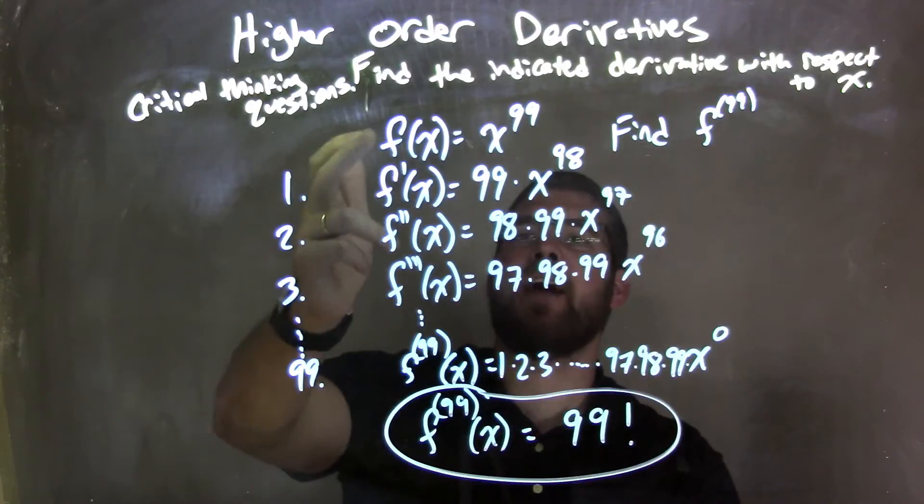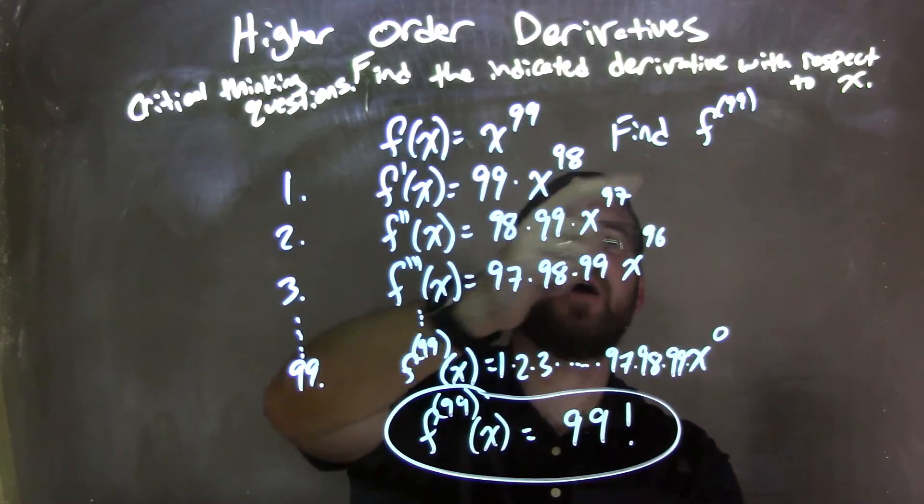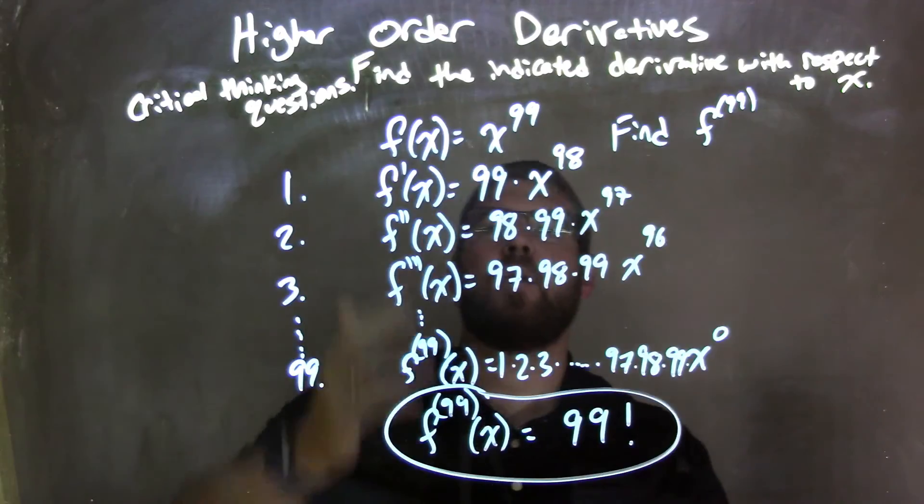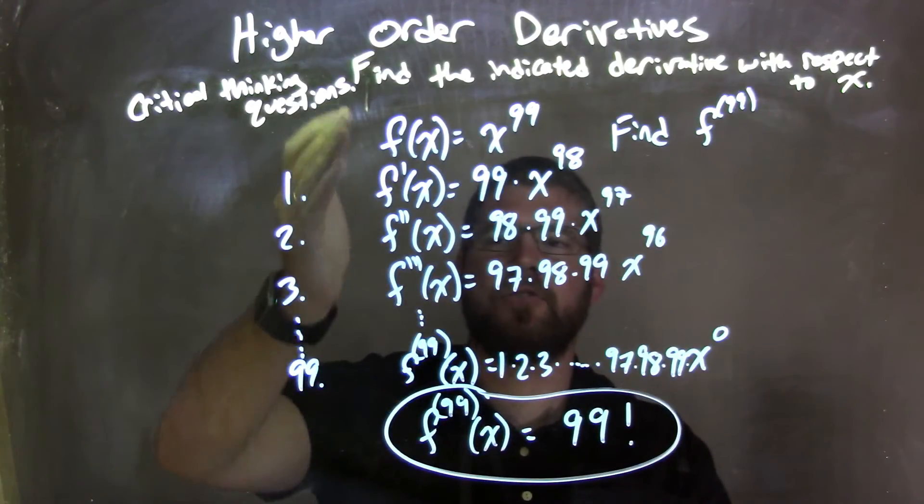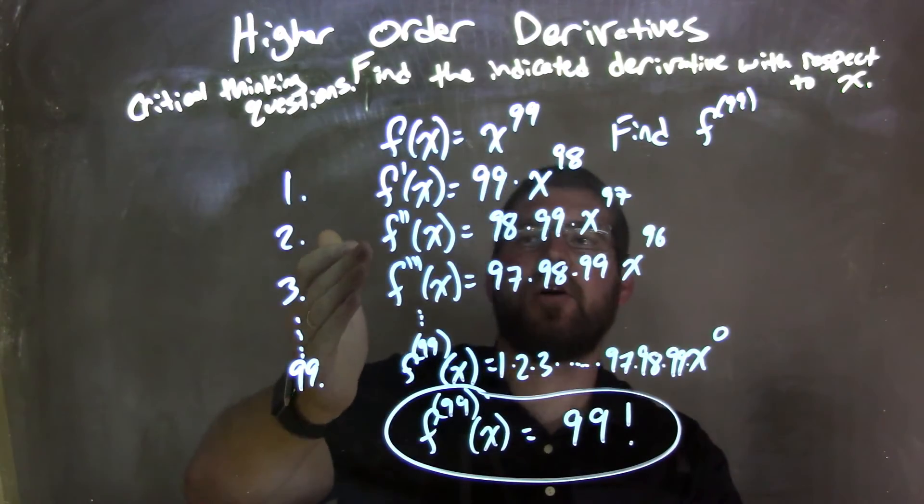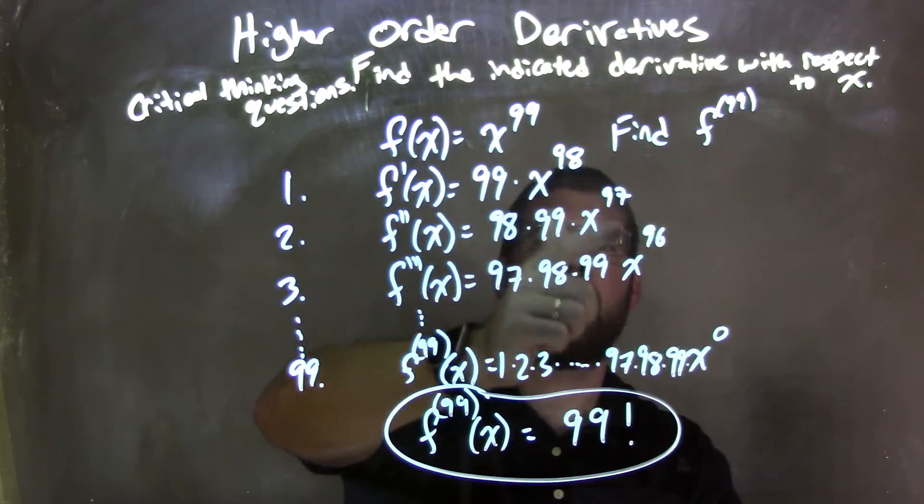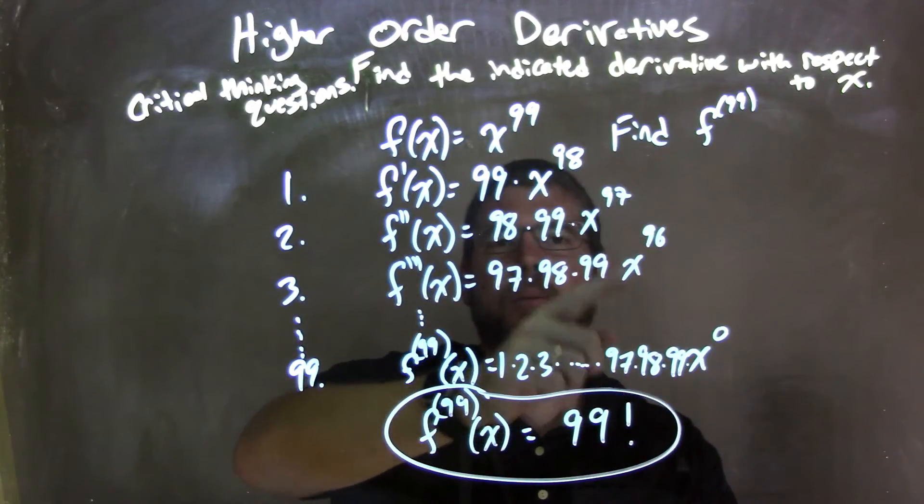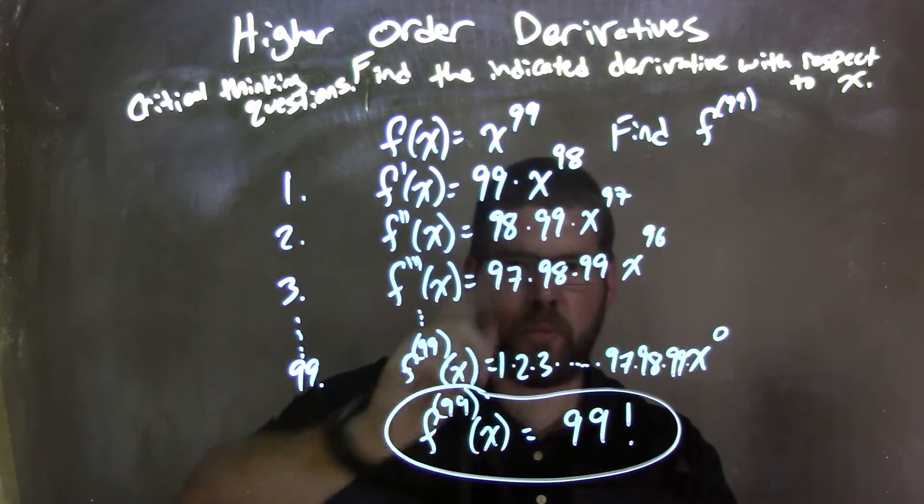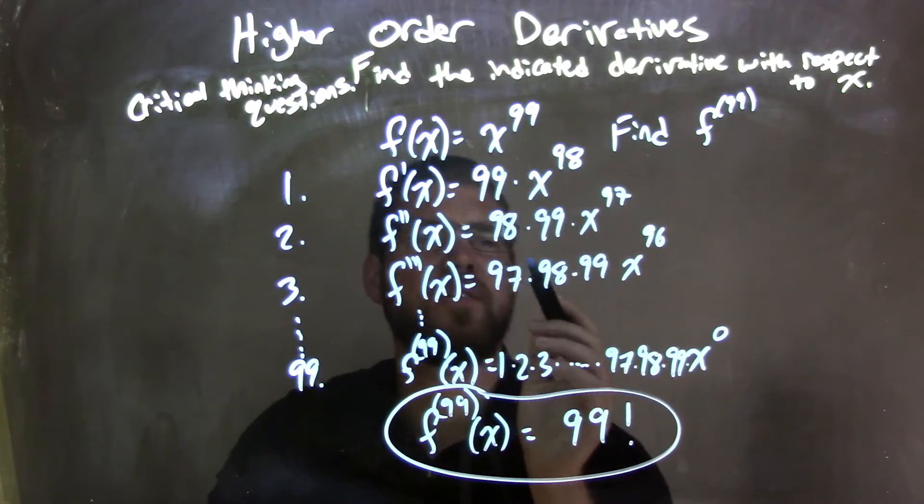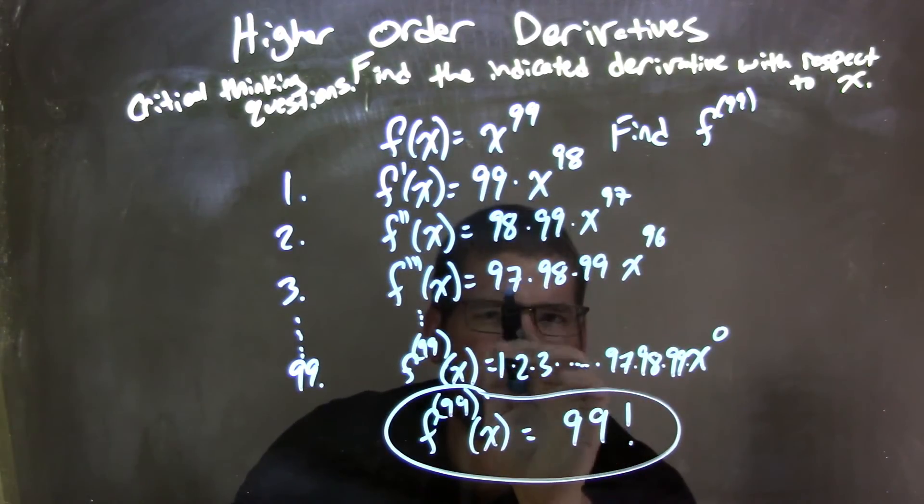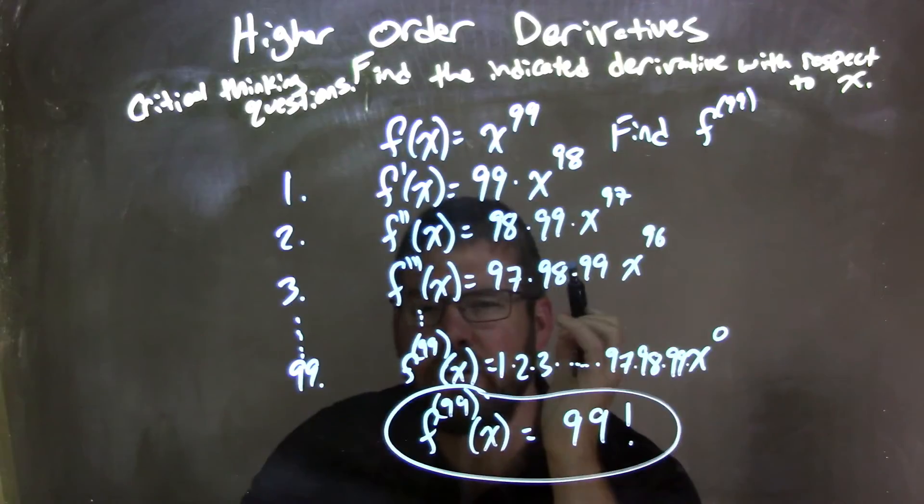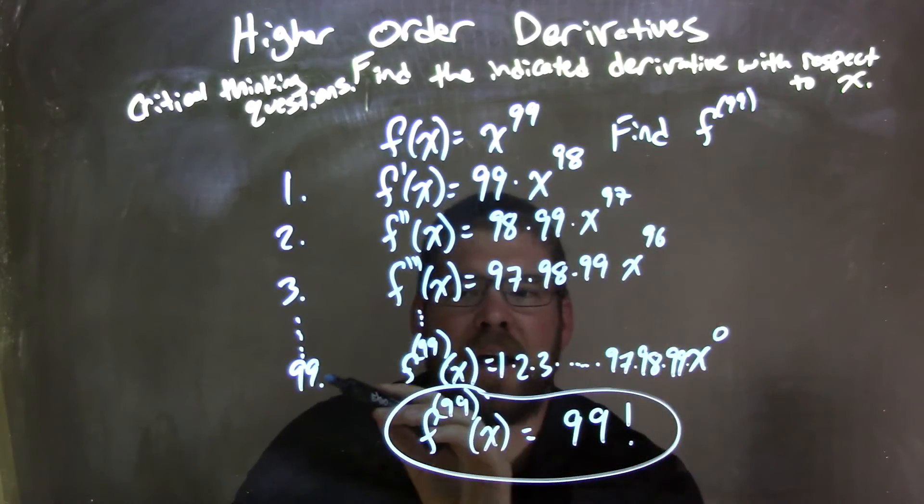So let's recap. We're given f of x equals x to the 99th power, and we need to find the 99th derivative. So I found the first, second, and third derivative to try to understand the pattern. What I saw is every single derivative would subtract the exponent by 1, and we're multiplying the previous exponent out here. I didn't simplify, I kept it all spaced out so I can see really what's going on.